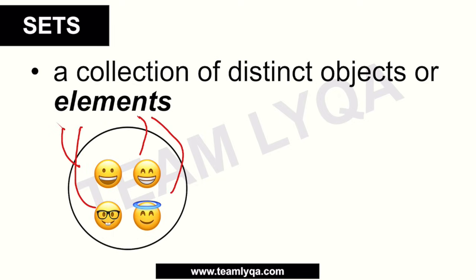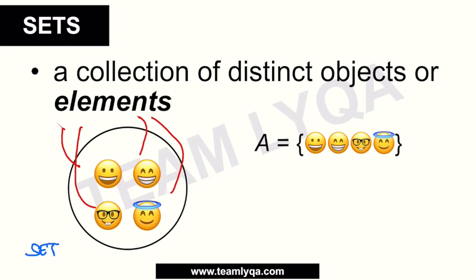When writing or notating a set, we use this format. So if this is set A, we can write it as: A is equal to, then we open the bracket, list everything inside the set, and then close the bracket. That's how you write it.